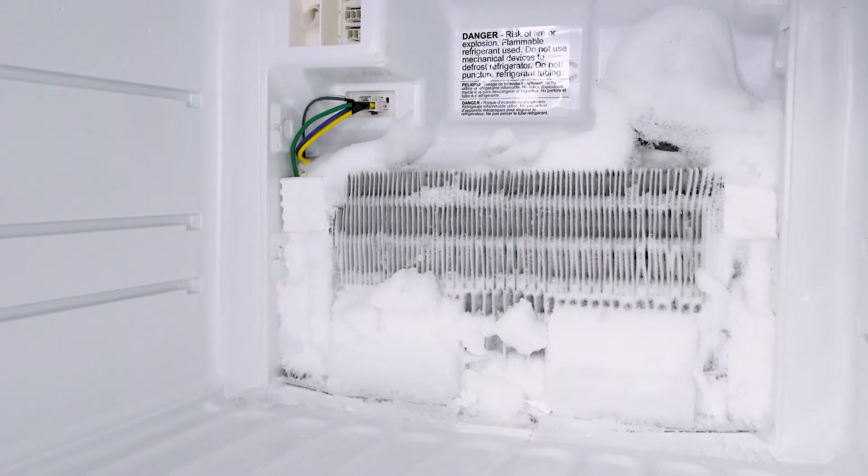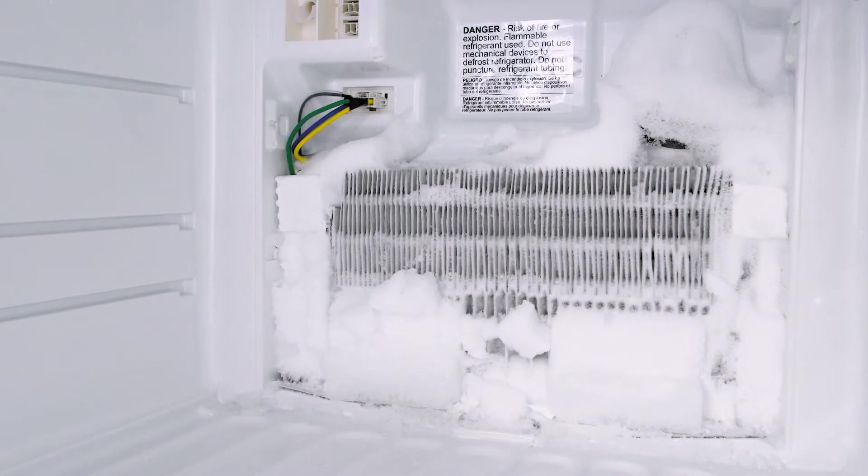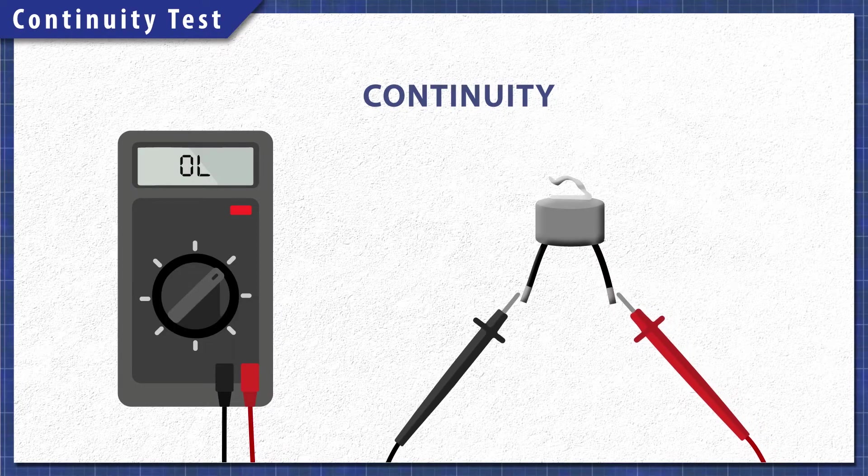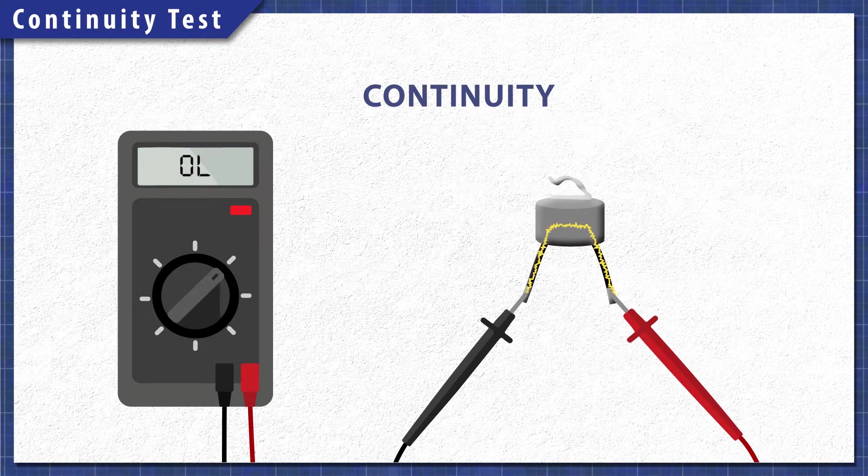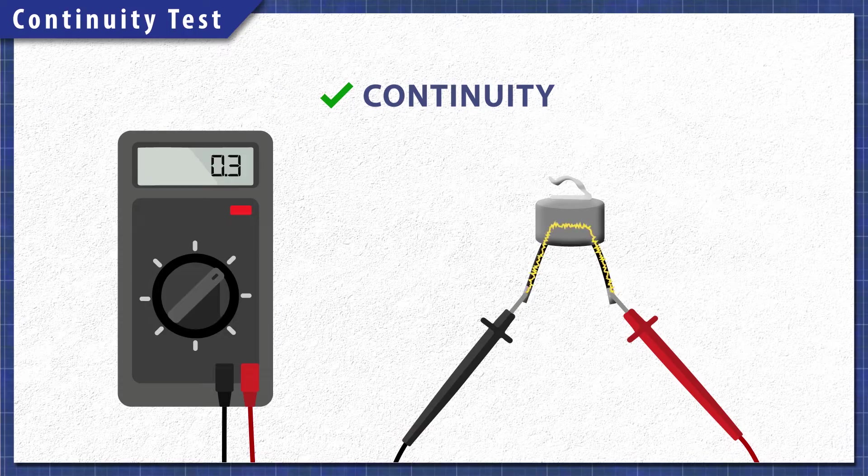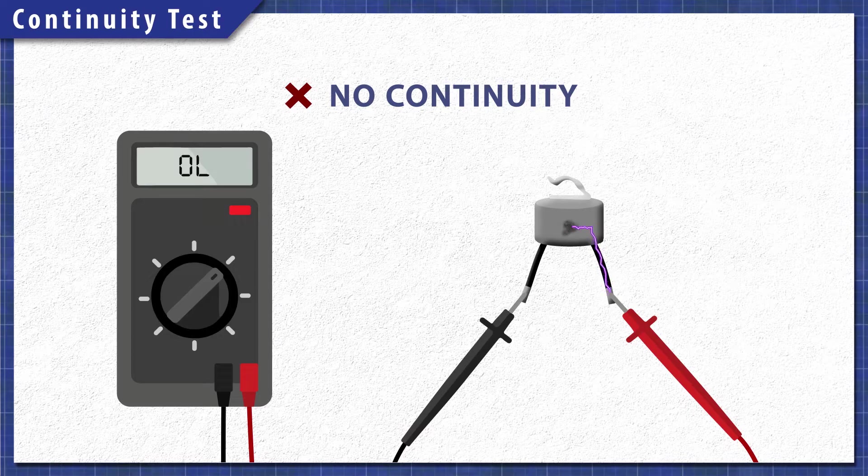If just one component fails, then the defrost cycle will not run, and ice will build up. Using a multimeter, components can be tested for continuity. A continuity test will determine if there is a continuous path for electricity to flow through. Without continuity, the component will not work and will need to be replaced.